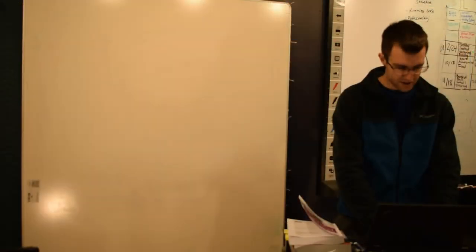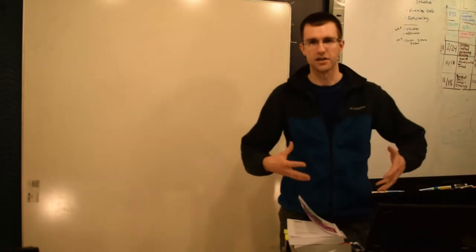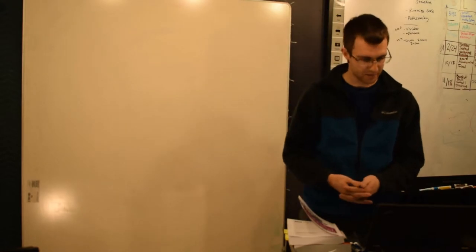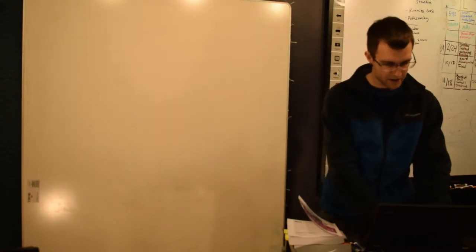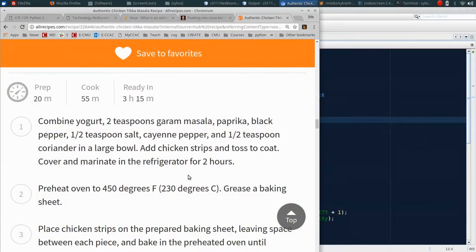So this list of ingredients is followed by the steps, the directions for actually carrying out the combination of these ingredients into a dish. So let's just take a peek at number one. It says combine yogurt, two teaspoons of garam masala, paprika, in a large bowl. Add chicken strips and toss to coat. Cover and marinate in the refrigerator for two hours.